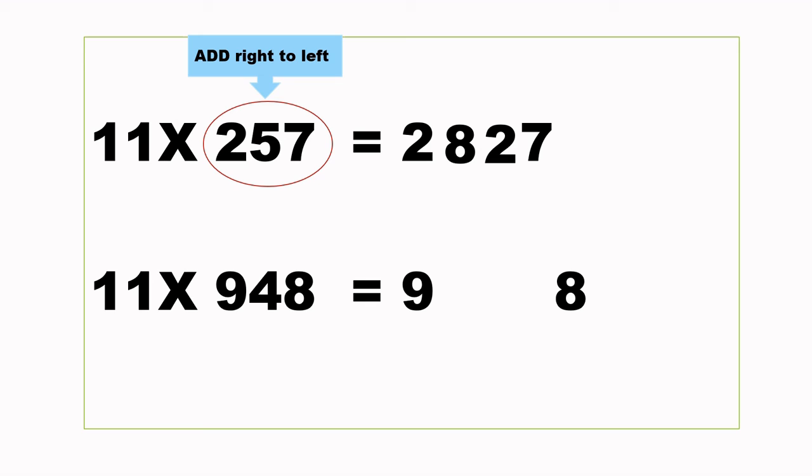11 times 948, our 8 is already there. Now let's add right to left. 4 plus 8 is 12, we put our 2 down, carry 1. 9 plus 4 is 13, plus 1 is 14. Put 4 down, carry 1.